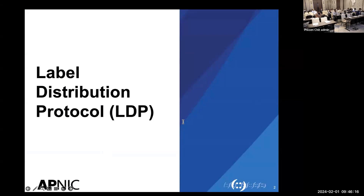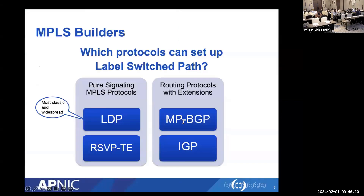In this second presentation we'll talk about LDP and basic MPLS configuration. LDP stands for Label Distribution Protocol — it is the protocol for exchanging labels between MPLS routers. Besides LDP, there are also RSVP-TE, MP-BGP, and some IGPs like OSPF and ISIS that can advertise MPLS labels. Despite limitations such as lacking traffic engineering capability and inter-domain support, LDP is still the most classic and widespread protocol, partly because of its simplicity and because Cisco heavily promoted it.